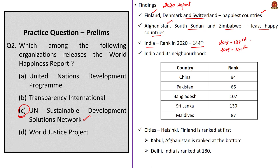India's rank is declining. Compared to its neighbors, except for Afghanistan, India is the least happiest country. In the 2020 report's city rankings, out of 186 cities, Helsinki in Finland ranked first and Kabul in Afghanistan ranked at the bottom. Delhi has been ranked at 180th position. These are some of the extra pieces of information you should know with respect to the World Happiness Report of 2020.